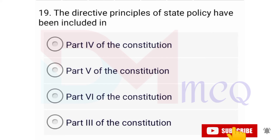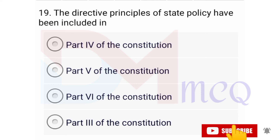Question number nineteen: The directive principles of state policy have been included in — options are Part 4 of the constitution, Part 5, Part 6, Part 3. Correct option is Part 4 of the constitution.